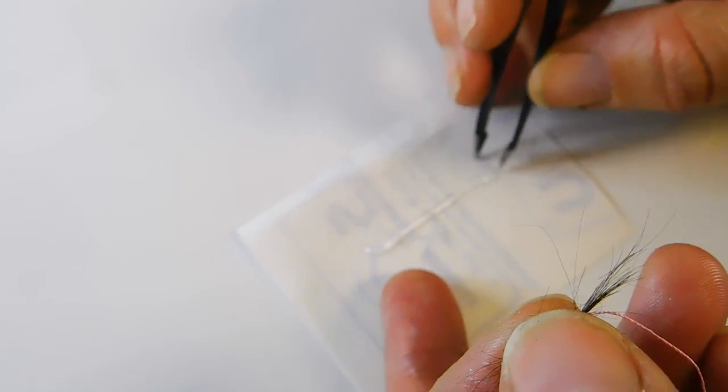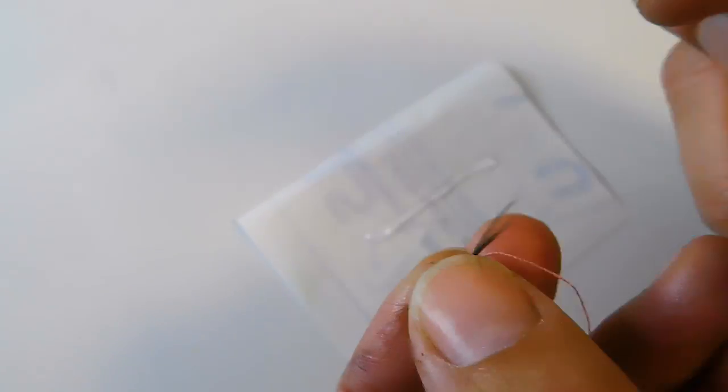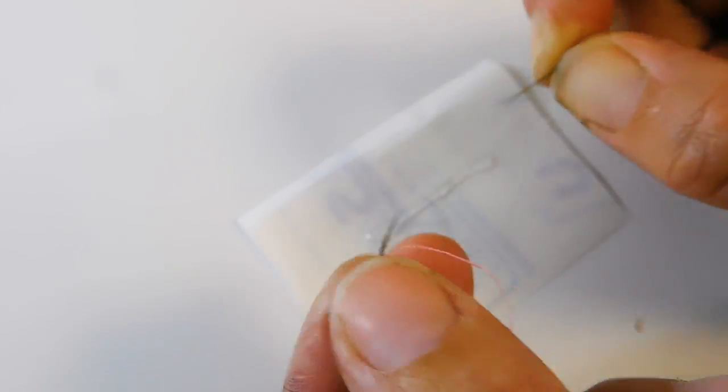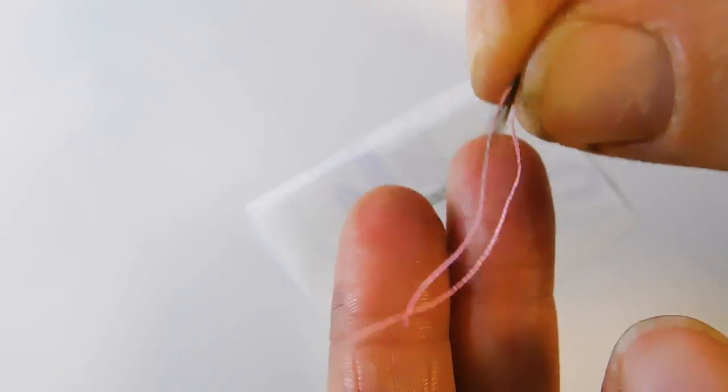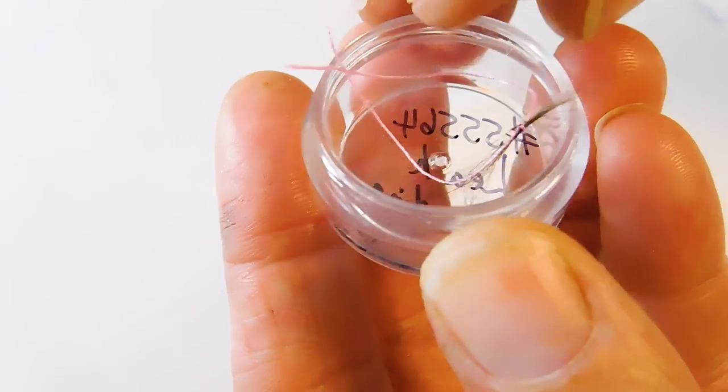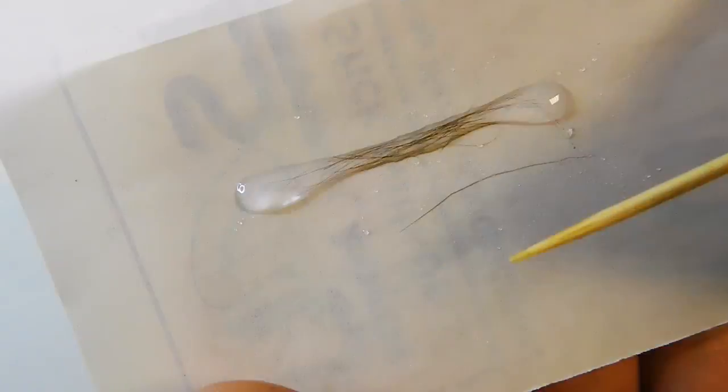Put a thin line of resin on a piece of label backing paper then add some of the hair. Don't use it all up no matter how much the clients send you. That's very important in case you make a mistake.